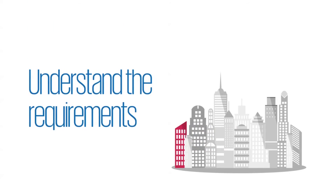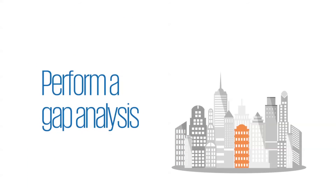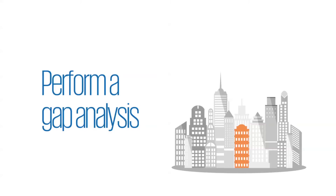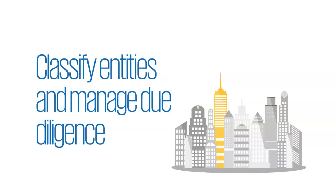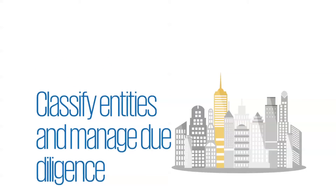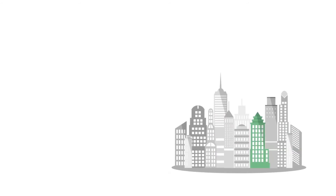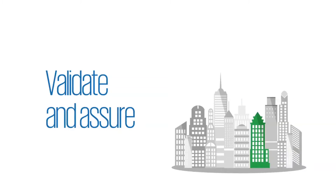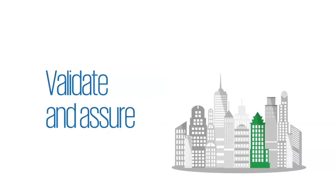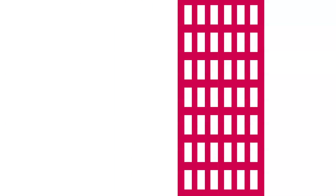So how do you come up with an effective strategy to implement and maintain AEOI compliance? First, you need to educate your organisation about the requirements. Then perform a gap analysis of your process systems and controls. Once complete, you'll need to classify your own entities, implement new onboarding procedures, remediate pre-existing account holders, and then collect, validate and format your entity information and your customer's personal and financial information into reporting — all the while maintaining key controls and assurance over compliance. KPMG can help at each stage.